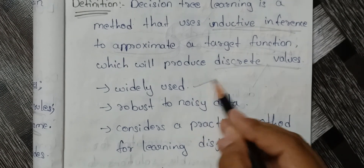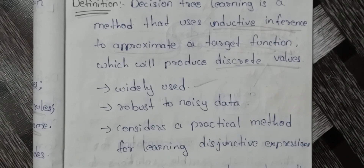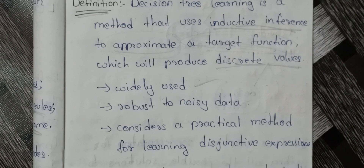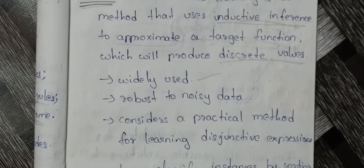Decision tree features: it is widely used and robust to noisy data — it can handle noisy data well. Next, it considers a practical method for learning disjunctive and conjunctive expressions.